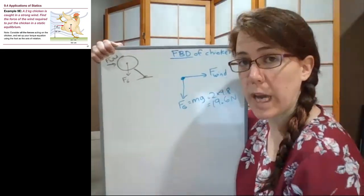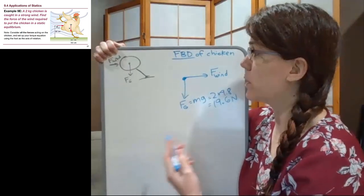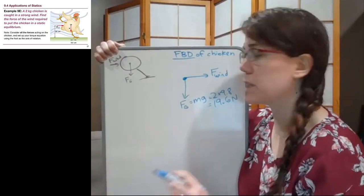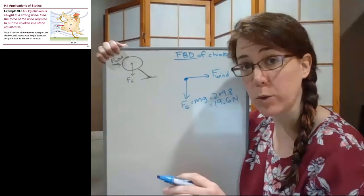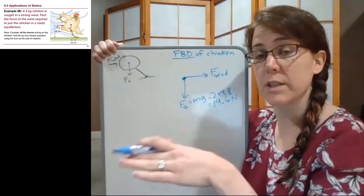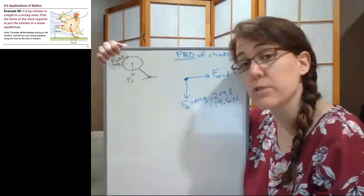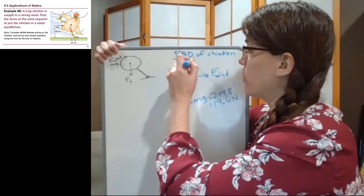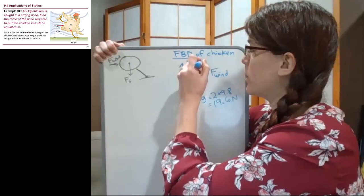So there are two forces that we haven't talked about yet in this problem that we know have to exist. The first one that we're missing is pretty straightforward. We have been working with the normal force since the very start of chapter four. This chicken is standing on the ground which means the ground is physically pushing up on that chicken with the standard normal force.